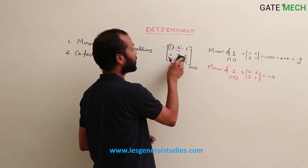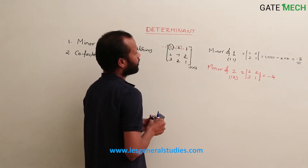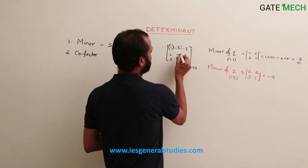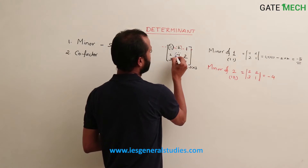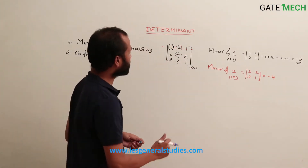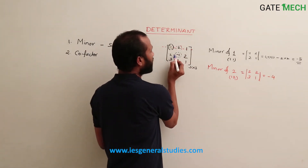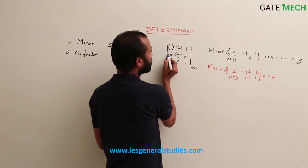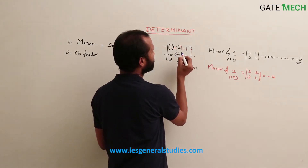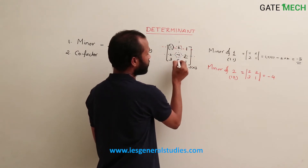Similarly, we calculate the minor of element -1 at position (2,2). We must exclude the row and column it belongs to — the second row and second column.